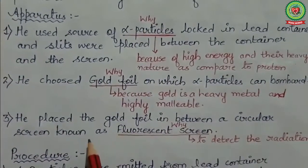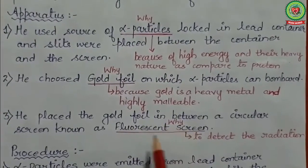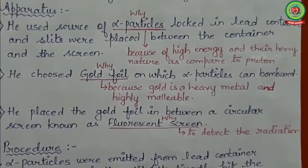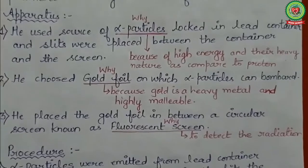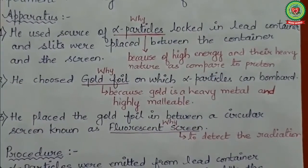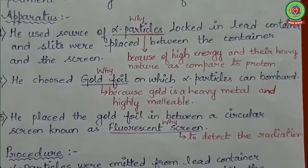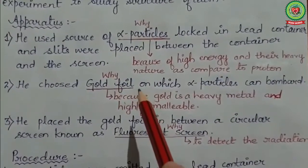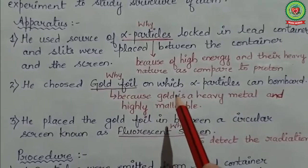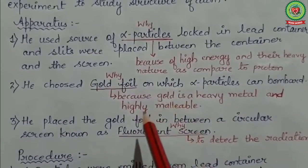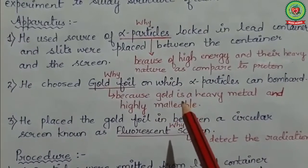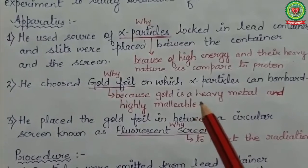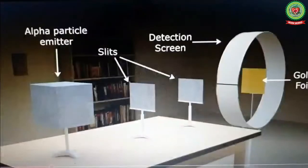He placed the gold foil in front of the lead container so that alpha particles could be bombarded onto it. He surrounded the gold foil with a circular, movable fluorescent screen to detect any radiations coming out. The fluorescent screen was used so that whenever alpha particles hit the gold foil and scatter, they could be detected on the large screen. Gold was chosen because it is a heavy, highly malleable metal — a thin gold foil can have approximately a thousand atoms, making it ideal for this study.